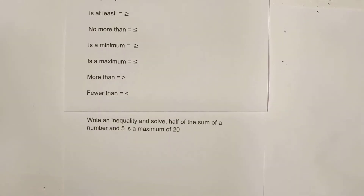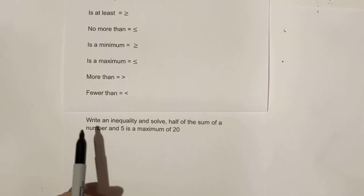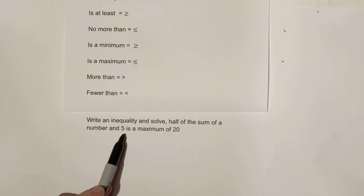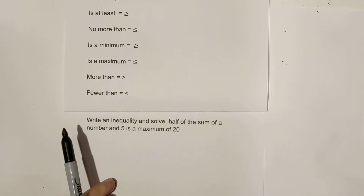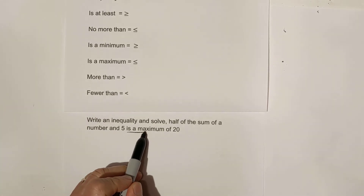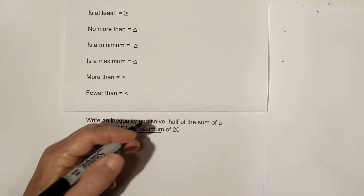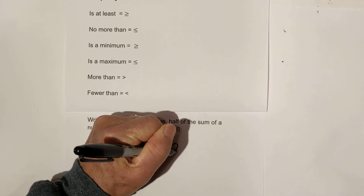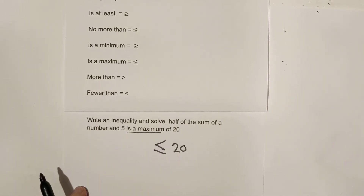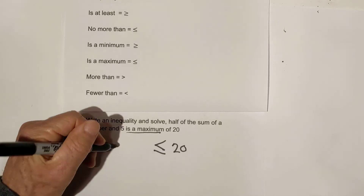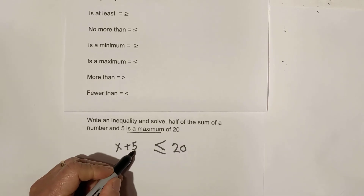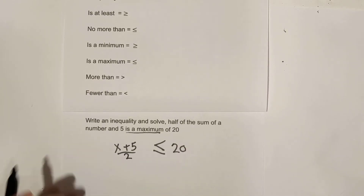One more. Let's see what it's asking: write an inequality and solve. Half of the sum of a number and five is a maximum of 20. 'A maximum of' is going to be less than or equal to 20, because it can't be greater than 20 — it's the max of 20. So we have x plus five, and we're going to have half of this sum, so I'm just going to place it over two.